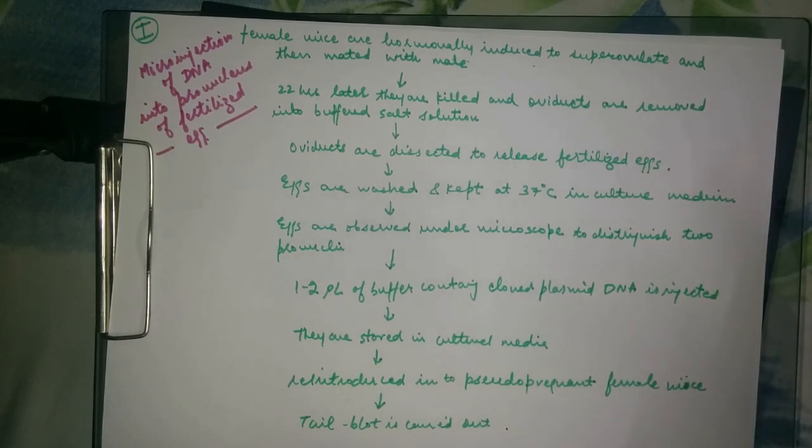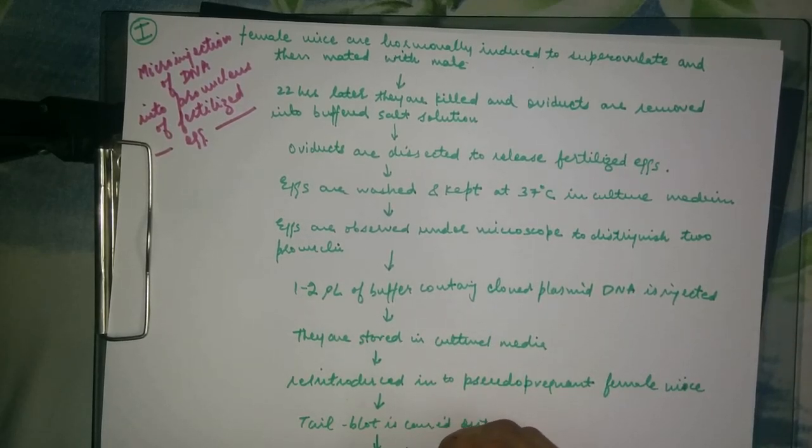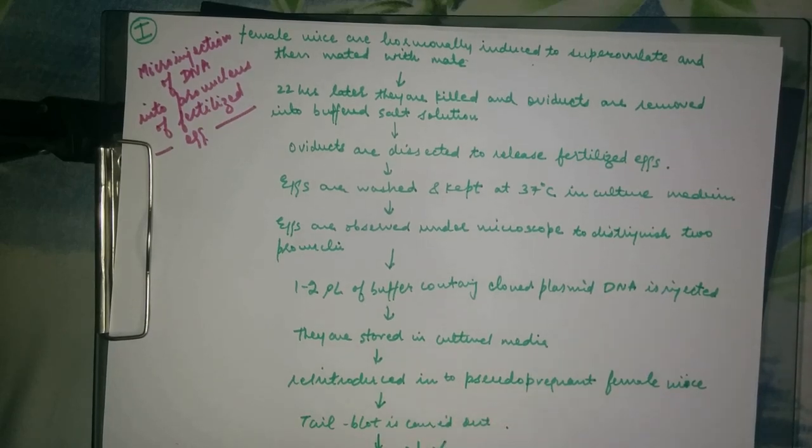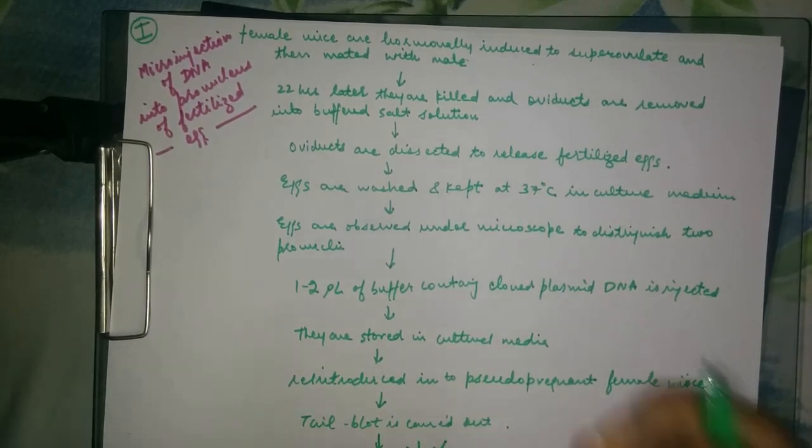This means they will be in the correct hormonal state to allow the implanted embryo to develop. After that, tail blot is carried out to detect the presence of foreign DNA in the offspring. The blood is collected from the tail, the DNA is prepared and probed to check the presence of specific introduced sequences. Now, 25% of these surviving injected embryos are transgenic, and these are the founder animals.